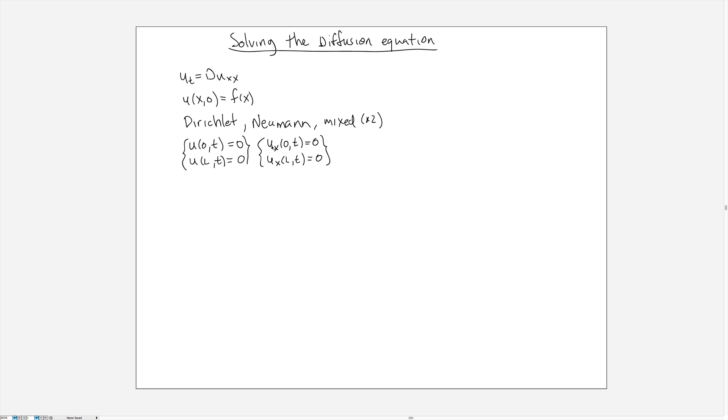A Neumann boundary condition tells us the slope of the function at the endpoints of the interval, and so in this case again we have the slope at 0 and the slope at L are both given by 0, and then the mixed conditions are where we mix and match these.